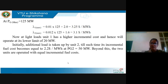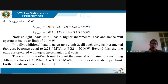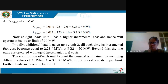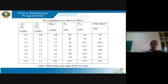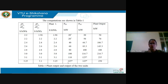Beyond PG2 = 50 MW, the two plants are operated with equal incremental fuel costs. The contribution of each unit is obtained by assuming different values of lambda. When lambda = 3.1 $/MWh, unit two operates at its upper limit and further loads are taken up by unit one. The table shows plant output, incremental fuel costs for both plants, power output of each plant, and total plant output.